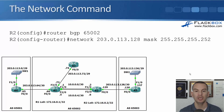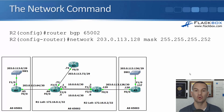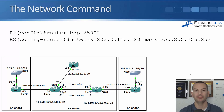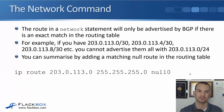We do the network command on R1 and we're also going to do the network command on R2, where we're going to advertise the 203.0.113.128 network. When we put the network statements in, those networks will be advertised to all of the BGP peers, and then those peers will advertise it to their peers as well. This is how we propagate the networks everywhere so every router knows how to route to everywhere else.